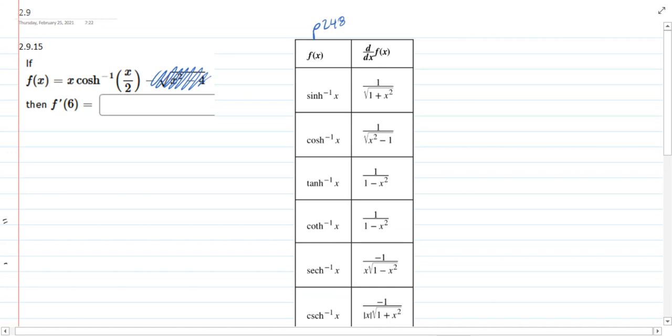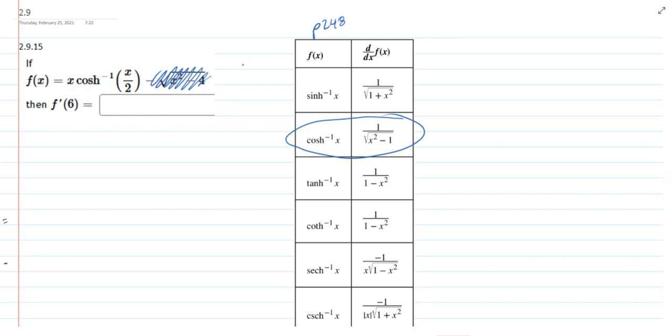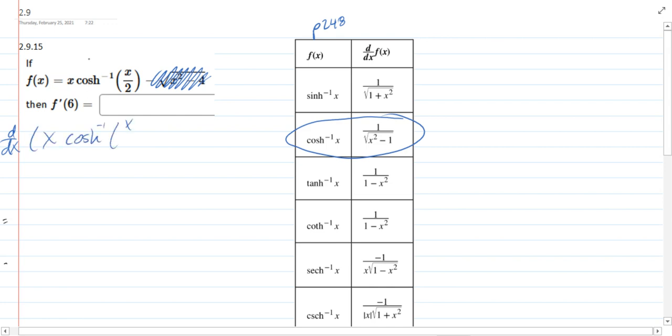We have hyperbolic cosine, which is cosh. You pronounce the H - cosh, or cinch, or tanch. They start to sound very silly, so I'm not going to keep pronouncing them. Okay, so we're going to take the derivative of x cosh inverse x over 2.